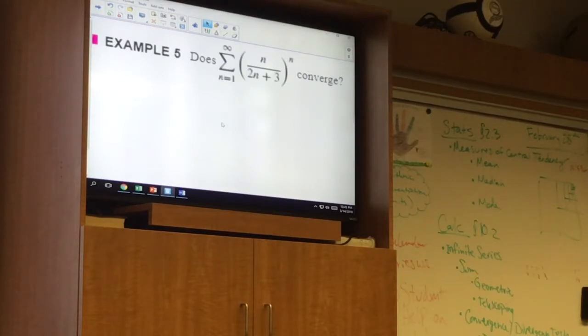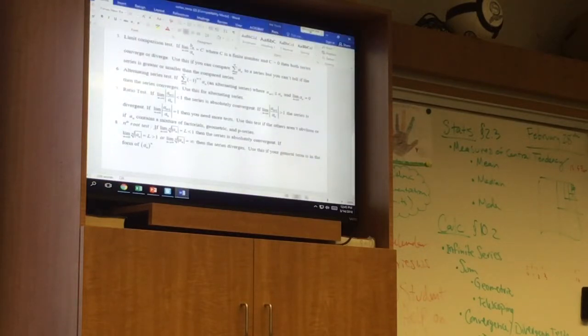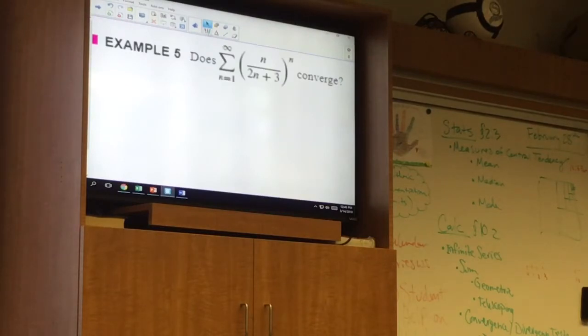So we're going to take the nth root. And let's remember what the nth root test says. It says we take the limit as n approaches infinity of the nth root of the absolute value of a sub n. So the root test says take the limit as n approaches infinity of the nth root of the absolute value of n over 2n plus 3 to the n. Well, we can see that the numerator and denominator are both going to be positive. So that absolute value doesn't really make a difference. And the nth root of something being raised to the nth power, those guys cancel each other out.